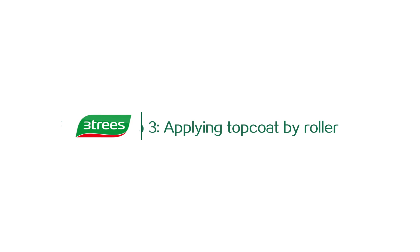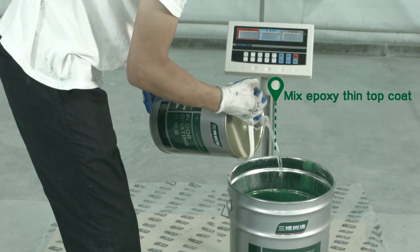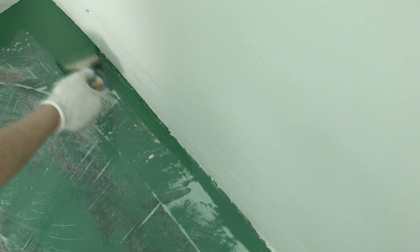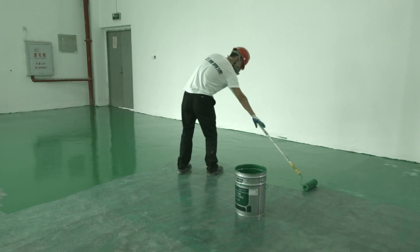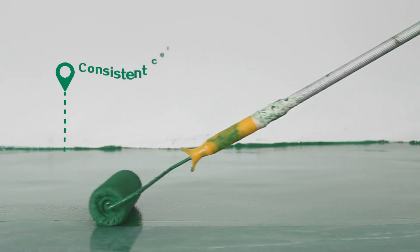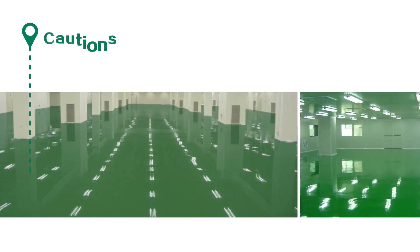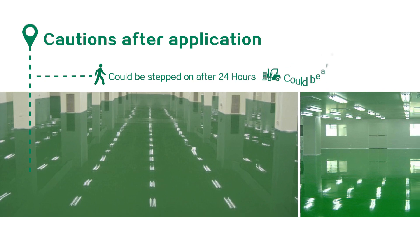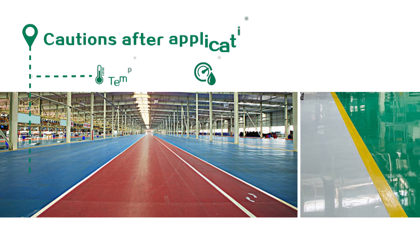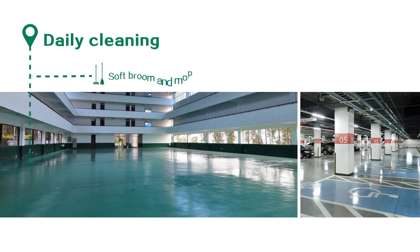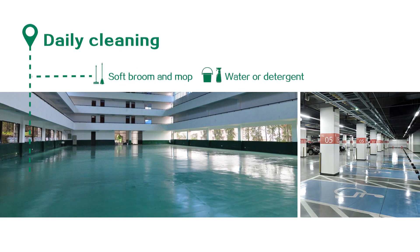Step 3: Apply top coat by roller. Mix epoxy thin top coat. Please mind to brush the corners. Apply epoxy thin top coat by roller for 1-2 times. Make sure the color is consistent and no obvious brush marks and joints. No omission and no bubbles. Please note that the coating could be stepped on after 24 hours, could bear load after 7 days, when dried under standard temperature and humidity. Daily cleaning with a soft broom and a soft mop. Mopping with water or detergent.